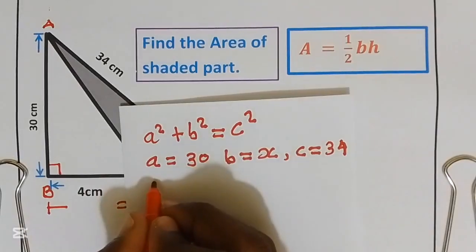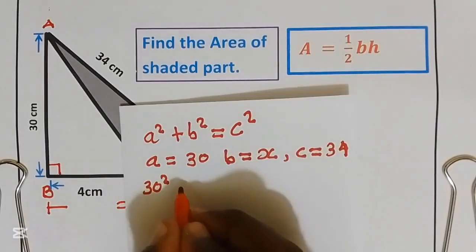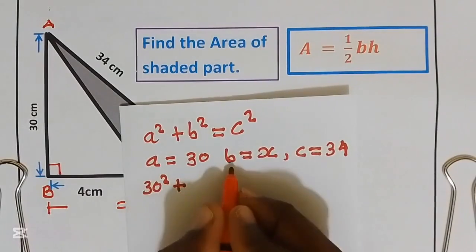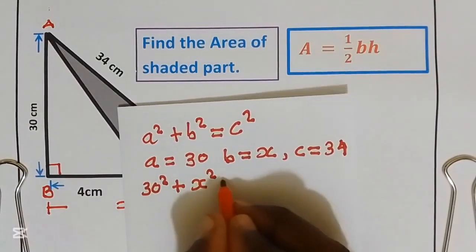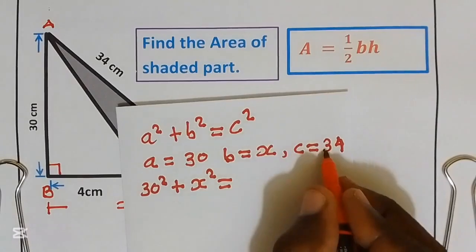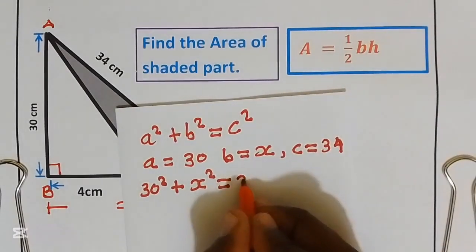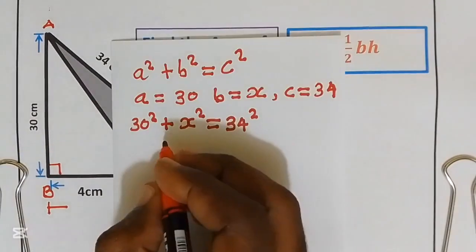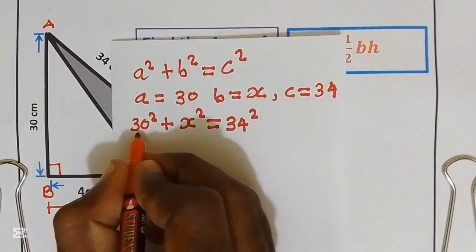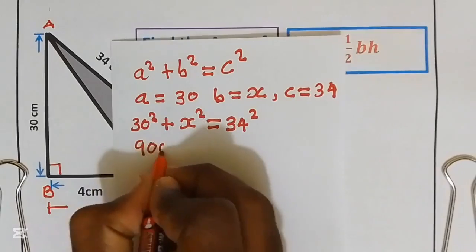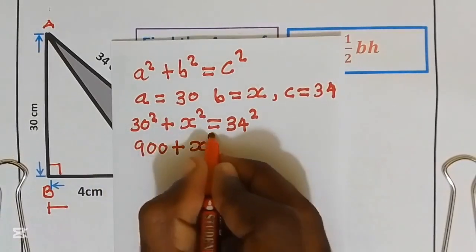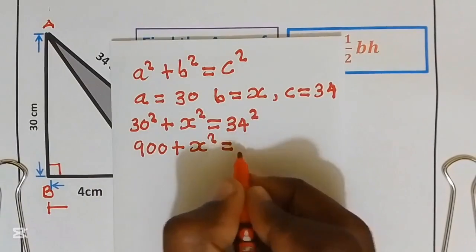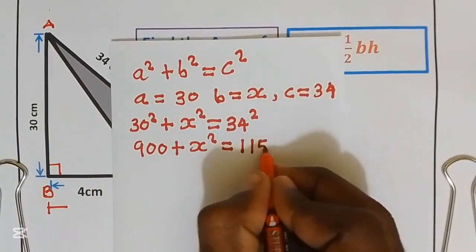Let's substitute this into the Pythagorean theorem to get the value of X. That is going to be 30 squared plus X squared equals 34 squared. 30 squared is 900 plus X squared equals 34 squared, which is 1156.